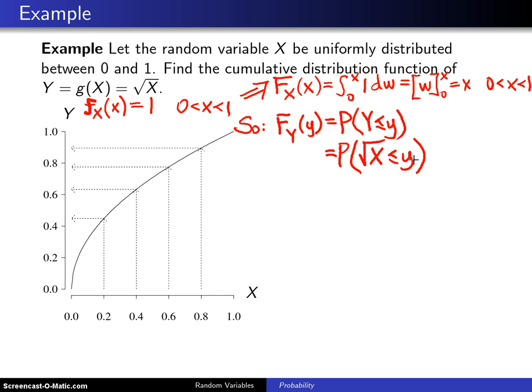Now, the next step is to try to write the inequality here in terms of X alone. And you can do that by squaring both sides of that inequality, and you get this. Now, remember, the probability X is less than or equal to something is just going to be the definition of the CDF of X. And that looks like this.